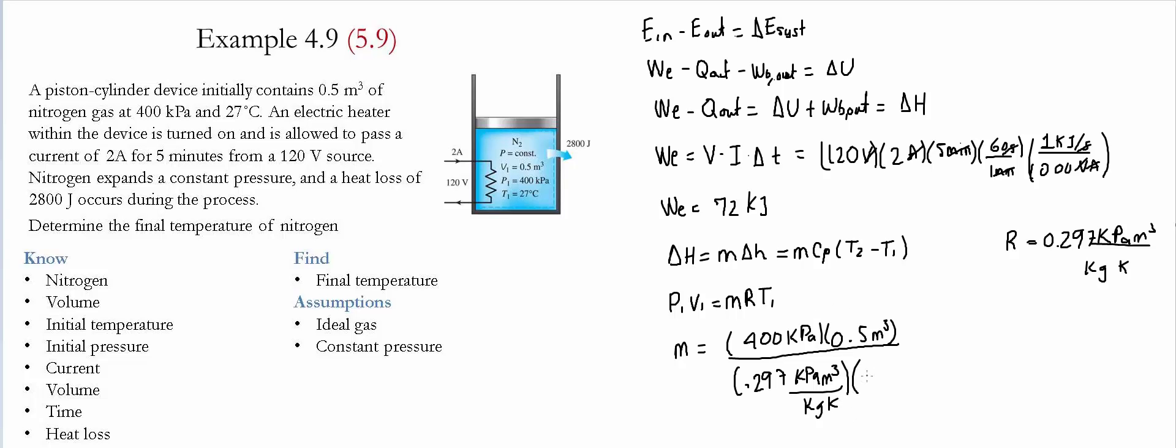Notice that we have 27 plus 273 to make it into Kelvin. Kelvin and Kelvin cancel, meter cubed and meter cubed, kilopascal and kilopascal. The ending unit is kilogram, which is a unit of mass. We do this operation and find that the mass equals 2.245 kilograms.